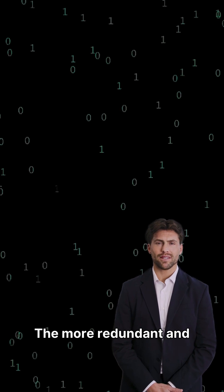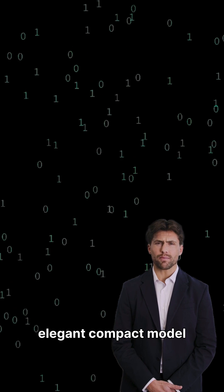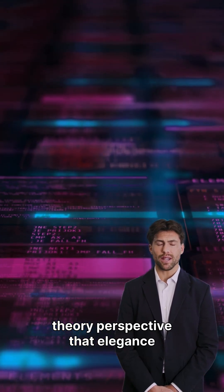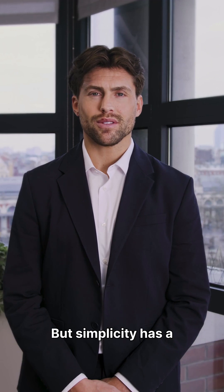The more redundant and symmetric a system is, the easier it is to describe with an elegant, compact model. From an algorithmic information theory perspective, that elegance reflects high compressibility. But simplicity has a cost.